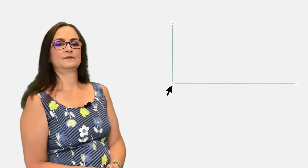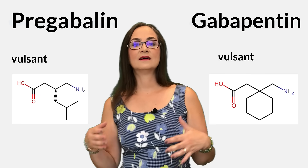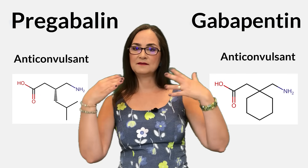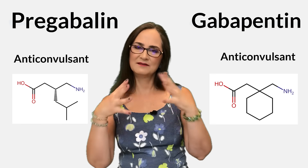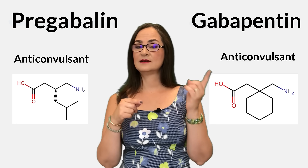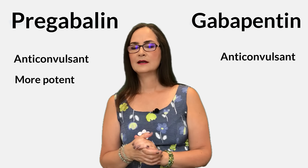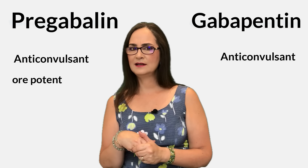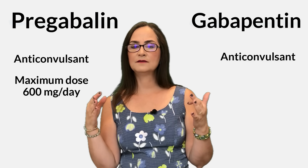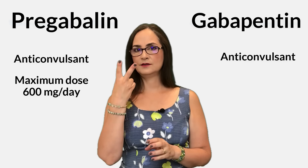Question number 5: Is gabapentin different from pregabalin? They are both anticonvulsants and two different drugs, but their effects are very similar in structure. Pregabalin is more potent than gabapentin and can be taken twice a day instead of three times a day. The maximum dose of pregabalin in a person with normal kidney function is 600 mg per day, divided into two doses of 300 mg each.